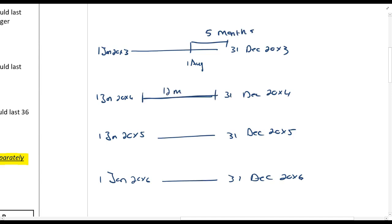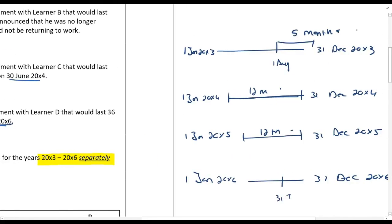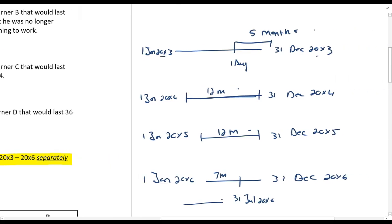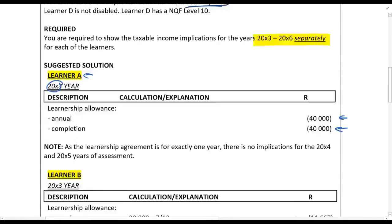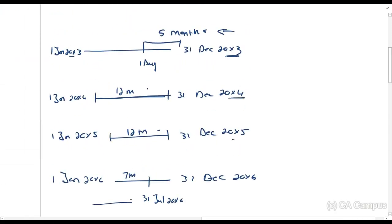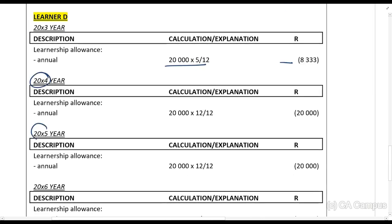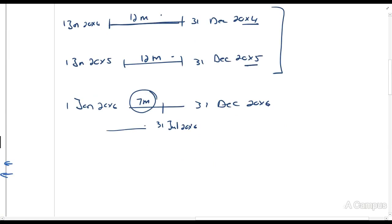For Learner D: 20X4 had a full 12 months, 20X5 had a full 12 months — that's 24 months plus the 5 months from 20X3 equals 29 months. So there are 7 months remaining, which is why completion falls in July 20X6. In 20X3: annual allowance × 5/12. In 20X4 and 20X5: full annual allowance each year. In 20X6: annual allowance for 7 months.